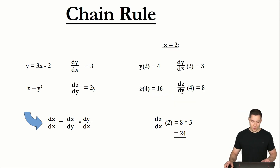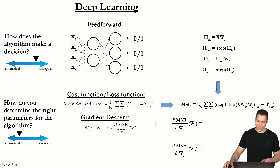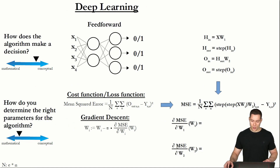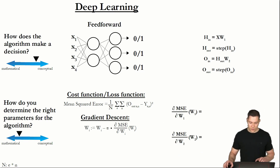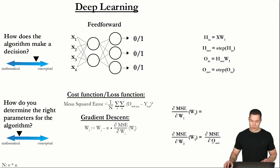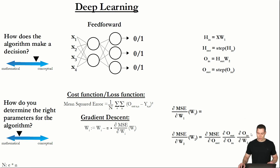Going back to our overview graphic, we can use the chain rule to very easily determine those two partial derivatives. Let's start with the partial derivative of the mean squared error with respect to weight matrix 2. We first determine the partial derivative of the mean squared error with respect to O_out, multiply that with the partial derivative of O_out with respect to O_in, and finally multiply those with the partial derivative of O_in with respect to weight matrix 2. We are using the partial derivative because we are determining the derivative with respect to a matrix containing many variables.